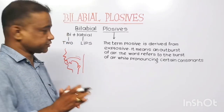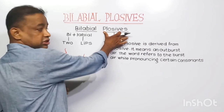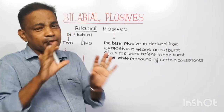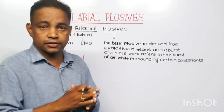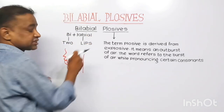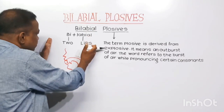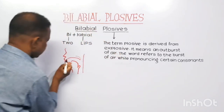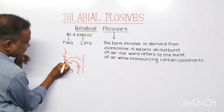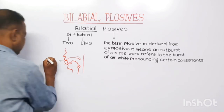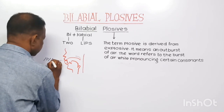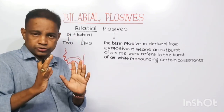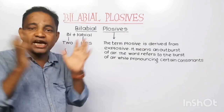Let us discuss bilabial plosives. Bilabial is the combination of two words: 'bi' meaning two, and 'labial' meaning lips. So when we produce a bilabial sound, we bring our two lips together. We can produce sounds like P, B, and M. These are bilabial sounds — when we produce these sounds, we bring our lips together.